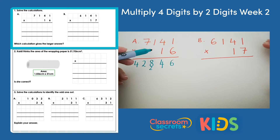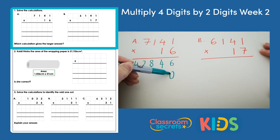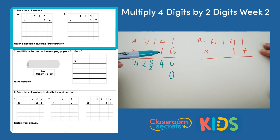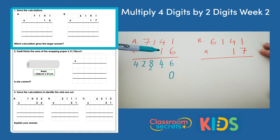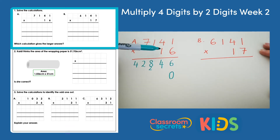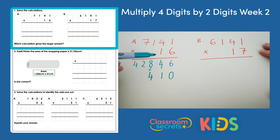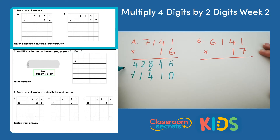The next job is to multiply the tens number. So we need to put a zero in the ones column to indicate we're multiplying by 10 and not by 1. And then we work through again. So 1 times 1 is 1. 1 times 4 is 4. 1 times 1 is 1. And 1 times 7 is 7.